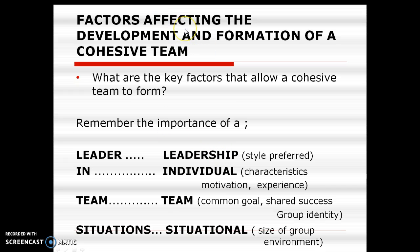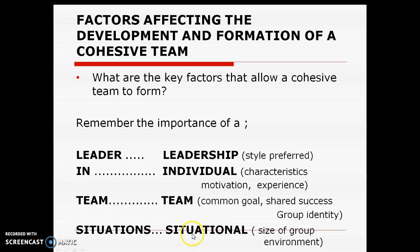This used to be called, in the old specification, factors affecting cohesion, but this one requires you to do the following. A theorist called Caron, C-A-R-R-O-N, came up with this cohesion model. Basically what they said was the factors that affect the development and formation of a cohesive team are split into four categories: leadership, individual, team, and situational. You need to be able to give examples or points from within those categories.